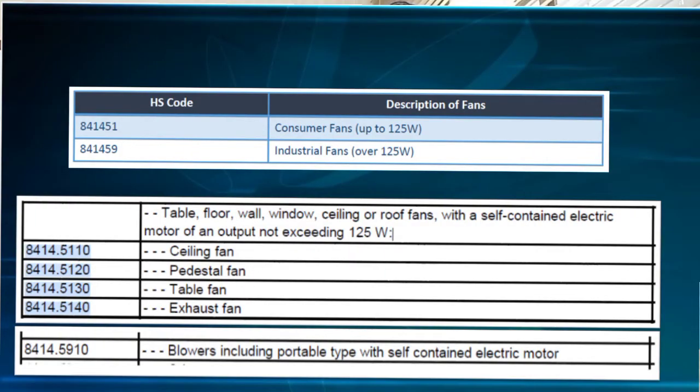In the same way, for industry and commercial fans, we use different HS codes. For domestic fans with an output of 125 watts, the HS code is 841451, and for the over-rating fan the code is 841459.